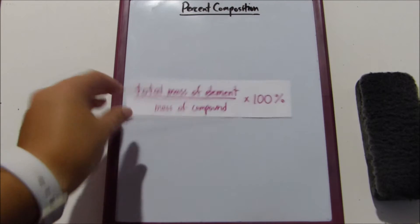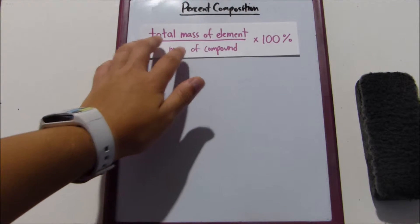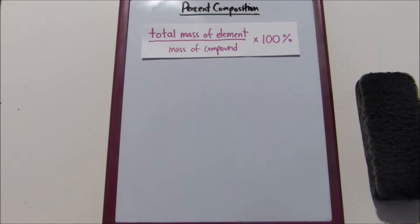So the typical equation we use to figure out the mass percentage is total mass of element divided by mass of compound times 100%.